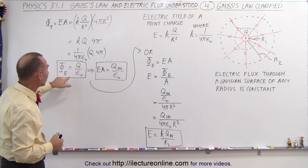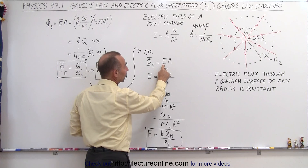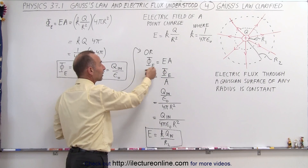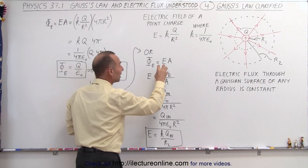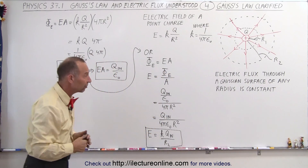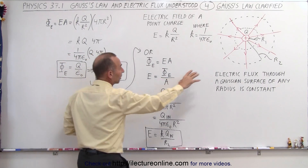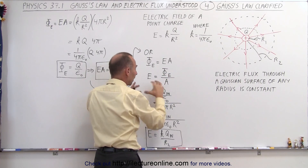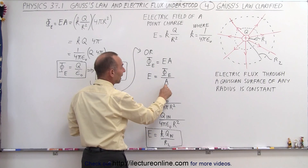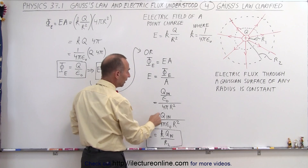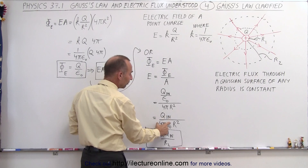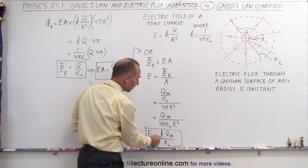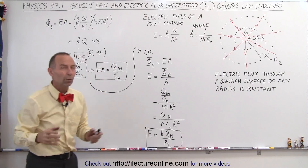We can also look at the electric flux as the product of the magnitude electric field times the surface area of the Gaussian surface, or solve for E: the magnitude electric field equals the electric flux divided by the area through which the flux passes. Since the electric flux is always Q-inside over epsilon-sub-nought, and the area is 4πR squared, bringing epsilon-sub-nought down gives Q-inside over 4π epsilon-sub-nought times R squared. Recognizing 1 over 4π epsilon-sub-nought as K gives us back the electric field equation for a point charge.